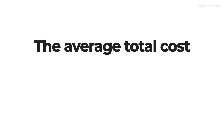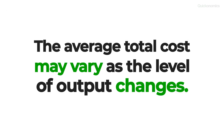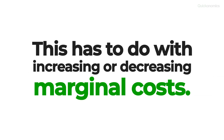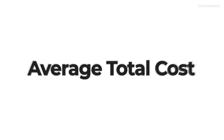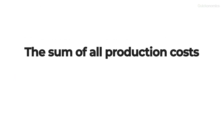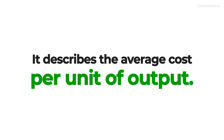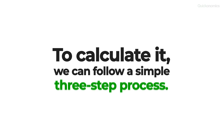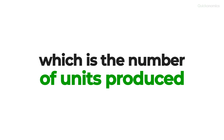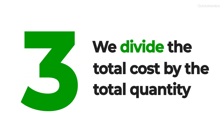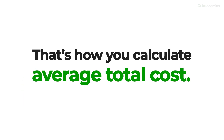Please note that the average total cost may vary as the level of output changes. This has to do with increasing or decreasing marginal costs, which we've covered in a previous video. To sum up: average total cost is defined as the sum of all production costs divided by the quantity of output produced — it describes the average cost per unit of output. To calculate it, follow three steps: first, define the quantity Q; second, calculate the total cost by adding all fixed and variable costs; and third, divide the total cost by the total quantity.